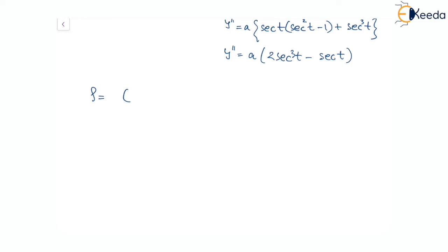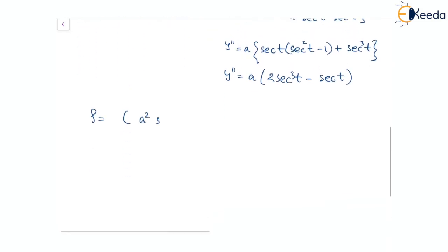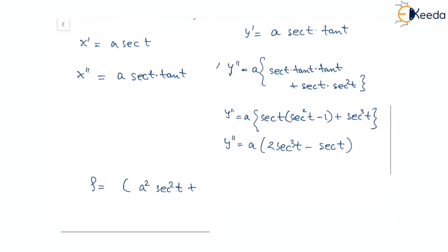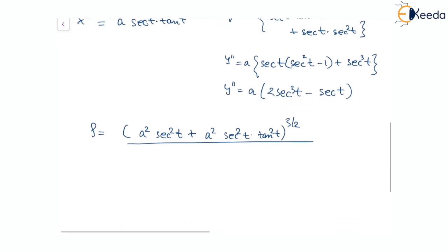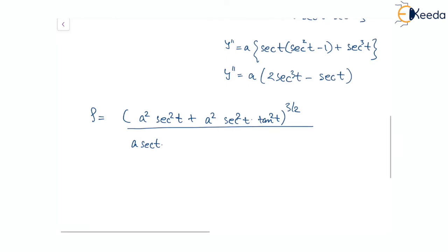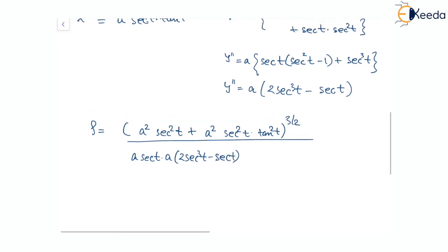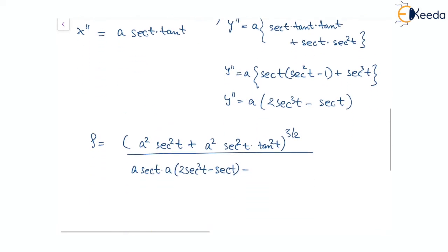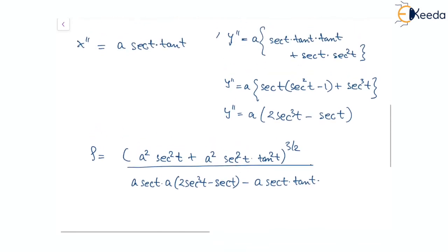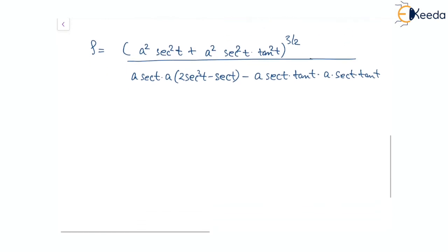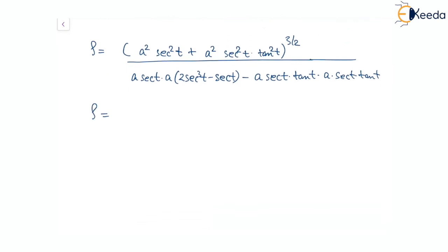Coming back to the expression for rho: x dash squared is a squared sec squared t, and y dash squared is a squared sec squared t tan squared t. So the numerator is a squared sec squared t plus a squared sec squared t tan squared t, all to the power of 3 by 2. The denominator is x dash times y double dash, which is a sec t times a times 2 sec cubed t minus sec t.